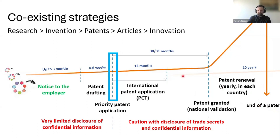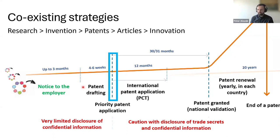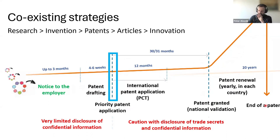Usually, you're doing research and at some point there is an invention. You have to send a notice to the employer. If it's worthwhile to put additional resources into it, you start drafting the patent application and file it. Then there's a process where the patent gets granted, you do national validations if it's an international patent, pay annual renewal fees, and after 20 years there is the end of the patent.